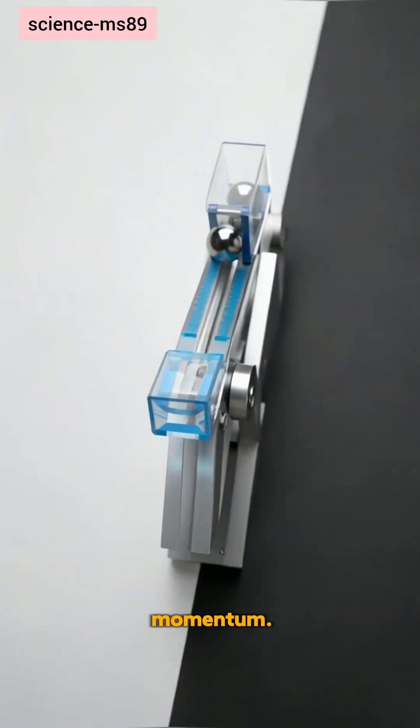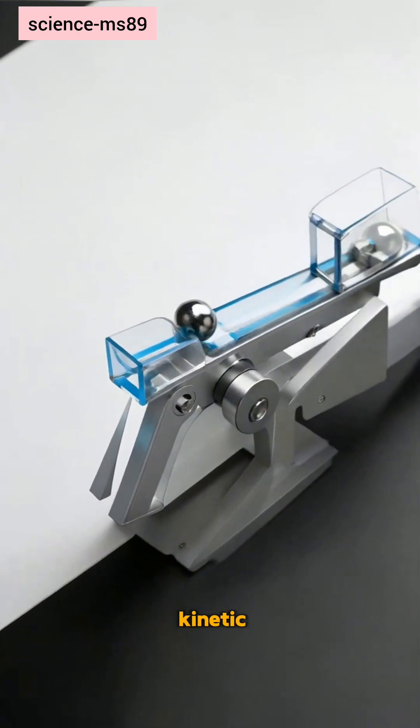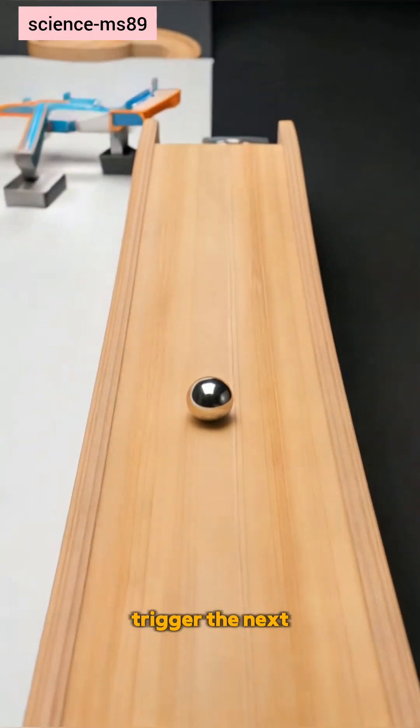Steel balls carry momentum. Rolling down stores kinetic energy that carries them past top dead center to trigger the next transfer.